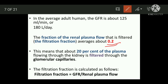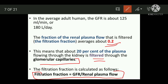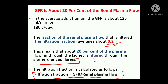This means that 20% of the plasma flowing through the kidney is filtered through the glomerular capillaries. The formula applied is: filtration fraction = GFR divided by renal plasma flow. Renal plasma flow is around 700 milliliters per minute, and GFR is around 125 milliliters per minute. When we divide these, your answer will be around 20%. So this is your filtration fraction.